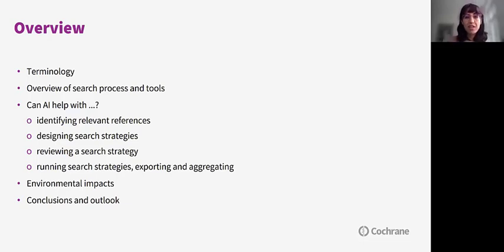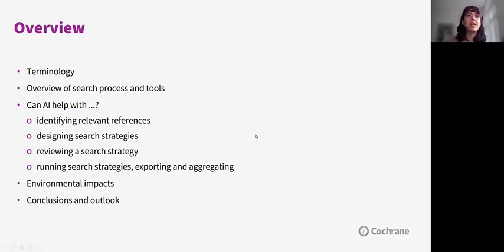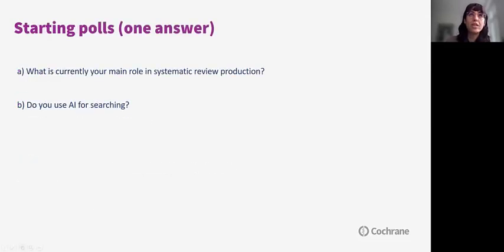We'll then delve into the main part of the webinar, which is: can AI help with identifying relevant references, designing search strategies, reviewing a search strategy, and running, exporting, and aggregating search results? We'll also speak a bit about the environmental impacts, and then take a look at conclusions and our personal outlook.